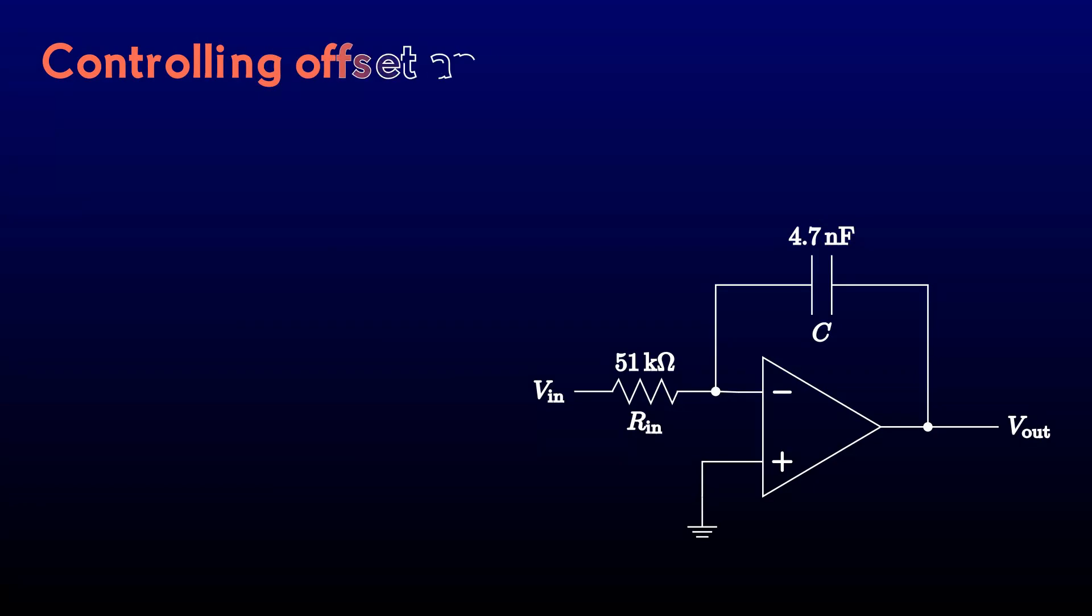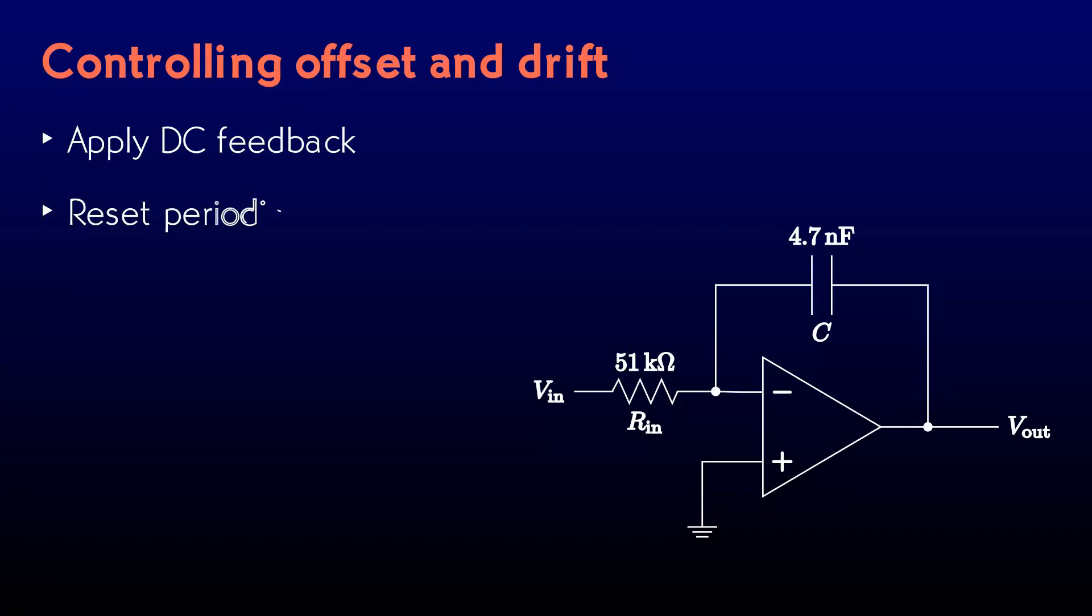There are a number of ways to attack this problem. If we're working only with AC signals, we can stabilize the circuit with DC feedback. Or we can reset the integrator periodically to zero and measure the output before it has a chance to drift too far. Or sometimes we get lucky and have a circuit that lets us ignore the problem. Let's look at each of these.